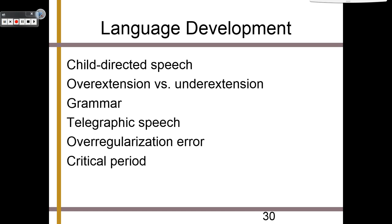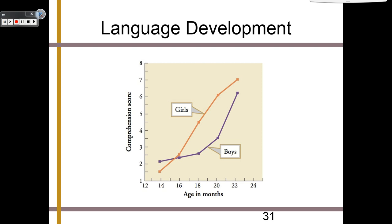There's a handy chart showing how the different genders are affected by language development. We know, for example, that girls tend to be much better at understanding and developing their own language than boys — they're just a little bit faster in terms of their comprehension.